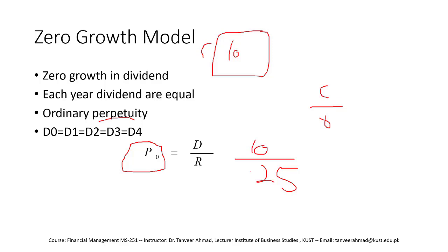This value of 40 is the true value or intrinsic value of the DJ Khan Cement Company stock. We need this intrinsic value to decide whether to buy the stock or not. If the stock were being sold in the market for 50 rupees, you would not buy it, because market value (50) is greater than intrinsic value (40) — the stock is overvalued. Conversely, if the stock were sold for 30 rupees, you would buy it because market value is less than intrinsic value — the stock is undervalued.